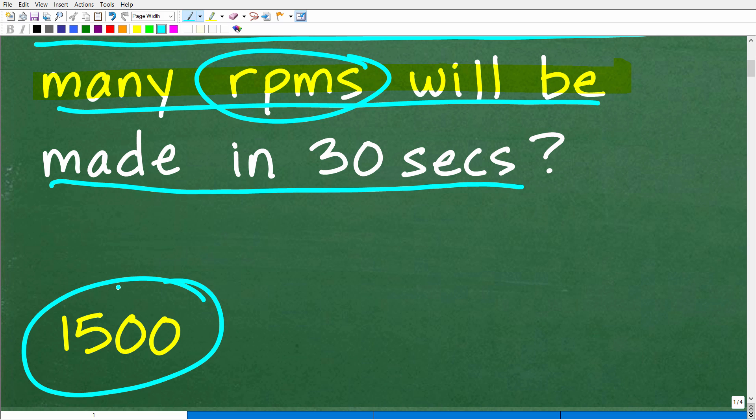So that engine is going to make 1,500 revolutions in 30 seconds, or it'll be going at 1,500 RPMs, which is, in fact, 3,000 RPMs. But again, we are talking about how many revolutions were made in 30 seconds. Okay, so hopefully no one's confused, and hopefully all of you out there got the right answer.